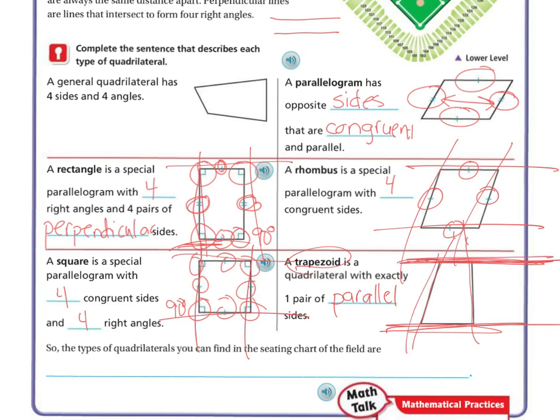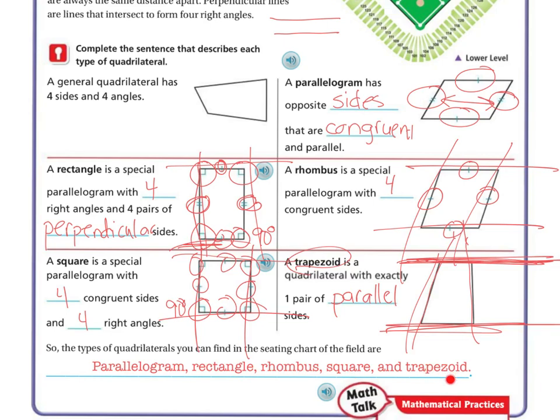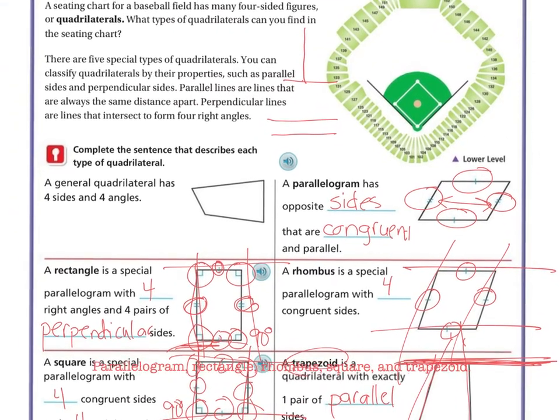So the types of quadrilaterals that you can find in a seating chart on the field are a parallelogram, a rectangle, rhombus, square, and a trapezoid. And that was from up above here, in this little diagram.